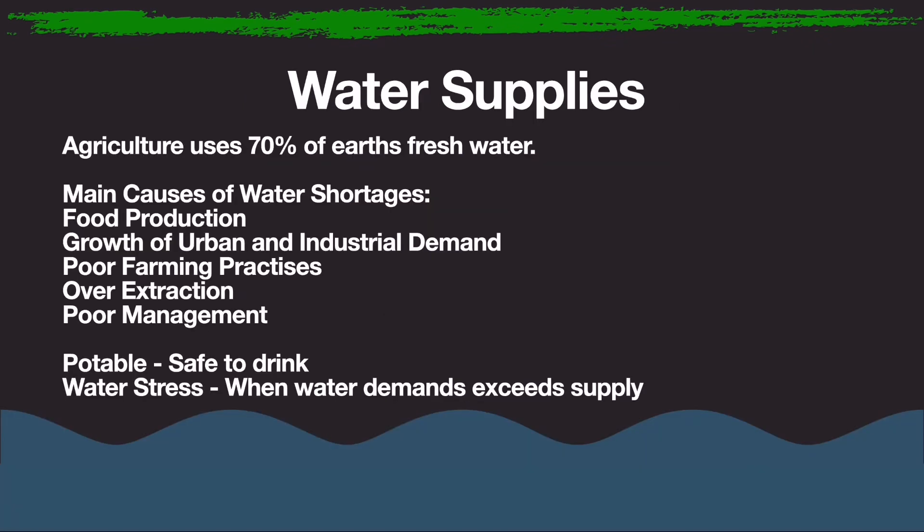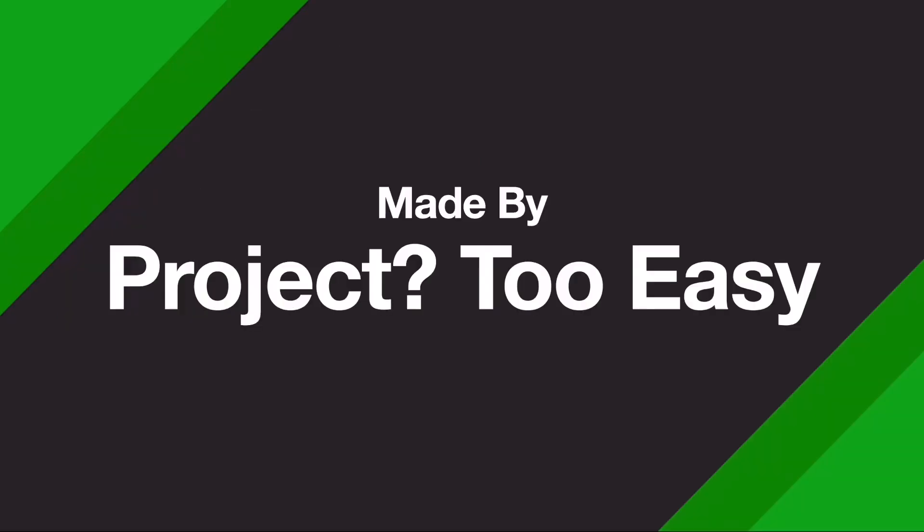Water supplies. Agriculture uses 70% of earth's fresh water. The main causes for water shortages are food production, growth of urban and industrial demand, poor farming practices, over-extraction, and poor management. Potable means safe to drink, and water stress is when water demands exceed the supply. And that brings us to the end of everything covered in the geography part of Year 9. This PowerPoint was made by me, Project 2easy, and I will be seeing you guys in the next video.